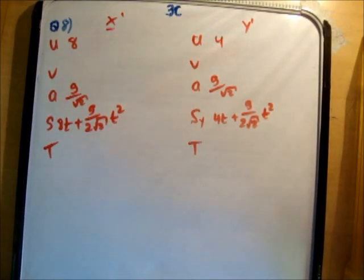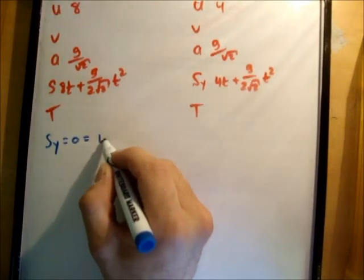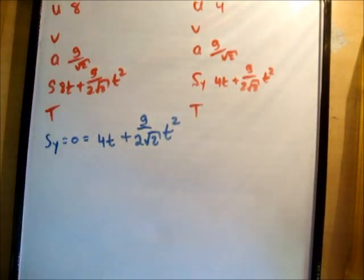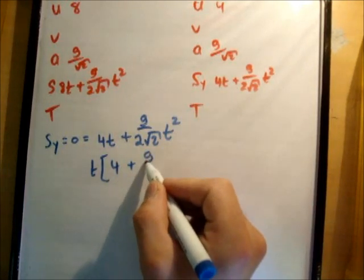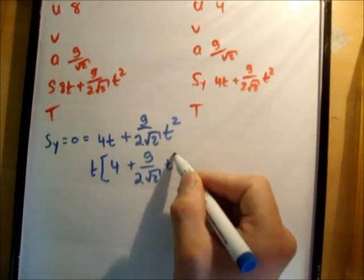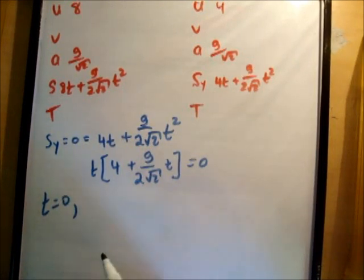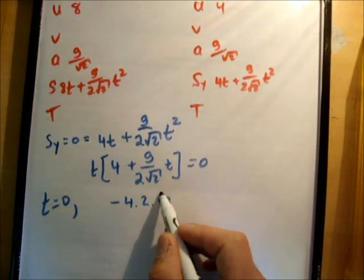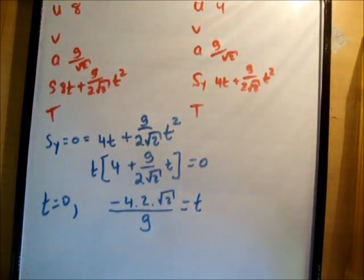So we need to find out the time at which s sub y is equal to 0. So s sub y is equal to 0 is equal to 4t plus g over 2 root 2 t squared. So take out t, we get 4 plus g over 2 root 2 t is equal to 0. If two things are multiplied together to create 0, one of them must be 0. So in this case t is equal to 0. And separately, minus 4 times 2 times root 2 over g is equal to t. So just let me work out what that time is. So 8 root 2. So it's 8 root 2 over g.